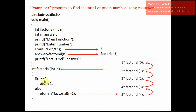So what will happen right now? It will check n equal to 0 or not. Now here we are passing 0 as the input, so n is 0, so it will return 1. Instead of that place, 1 will be substituted. So it will find 1 into 1; answer is 1. So this 1 will be given back. So 2 into 1 will be calculated; the answer is 2. The 2 will be given to factorial of 2. So 3 into 2 is 6. 6 will be applied, and 6 into 4 is 24. 24 will be given, and 24 into 5 gives 120. So the output will be displayed as 120.